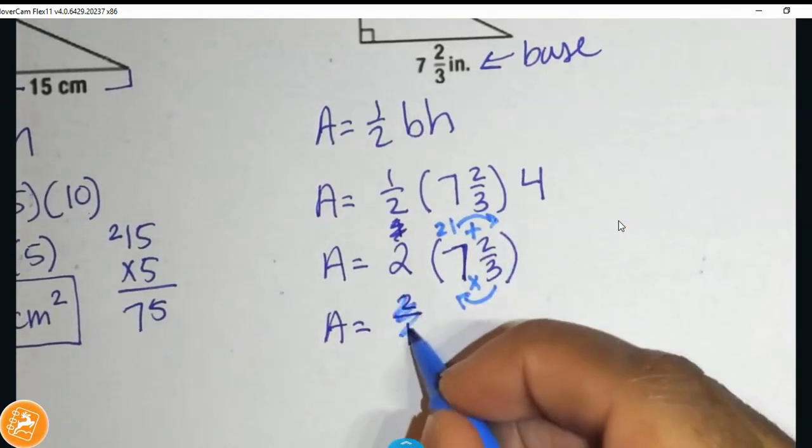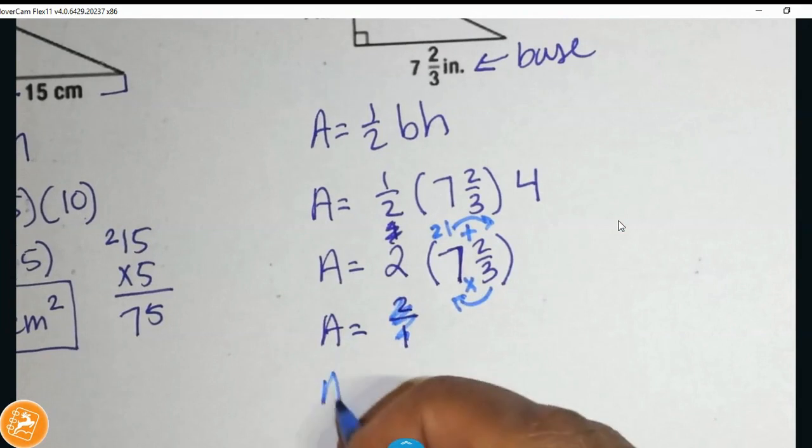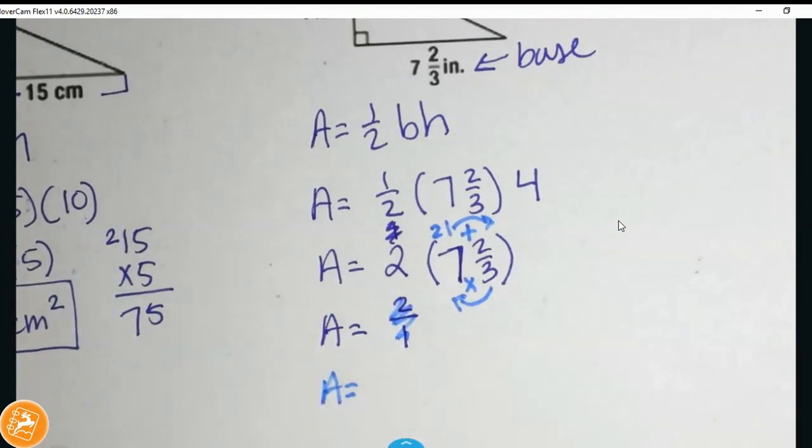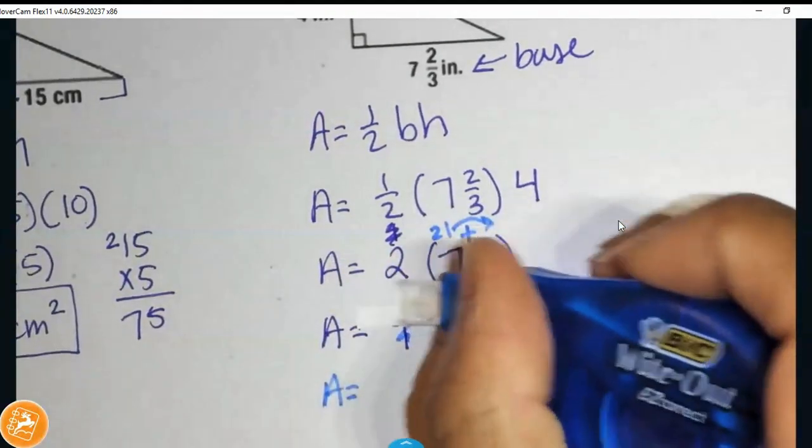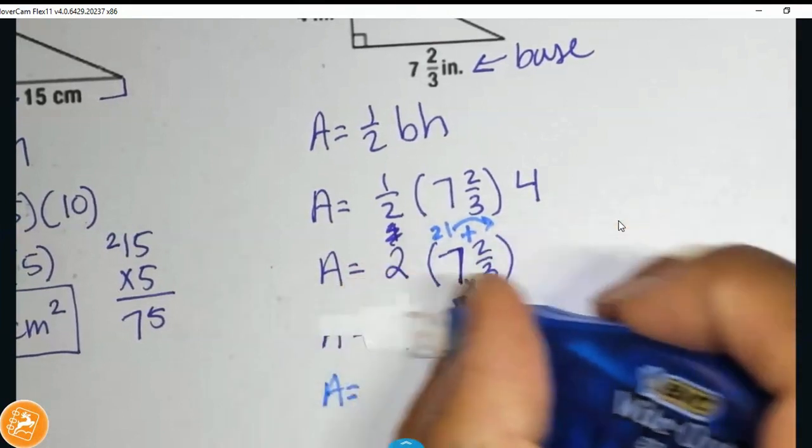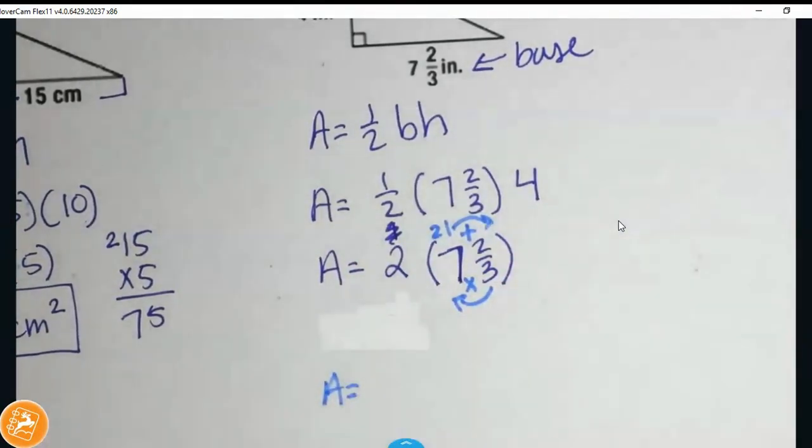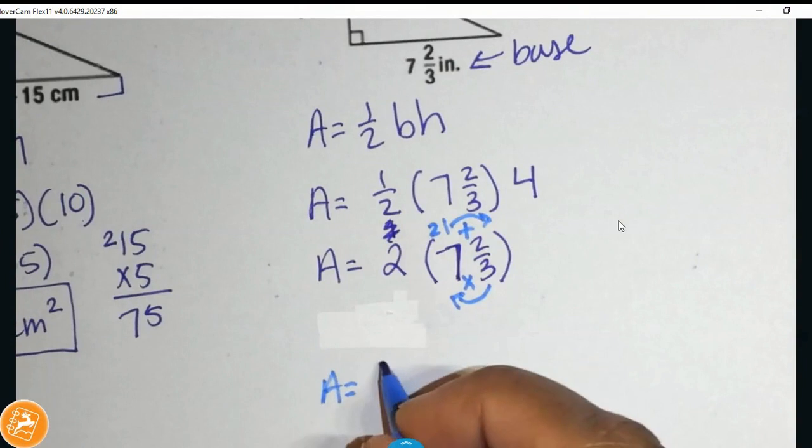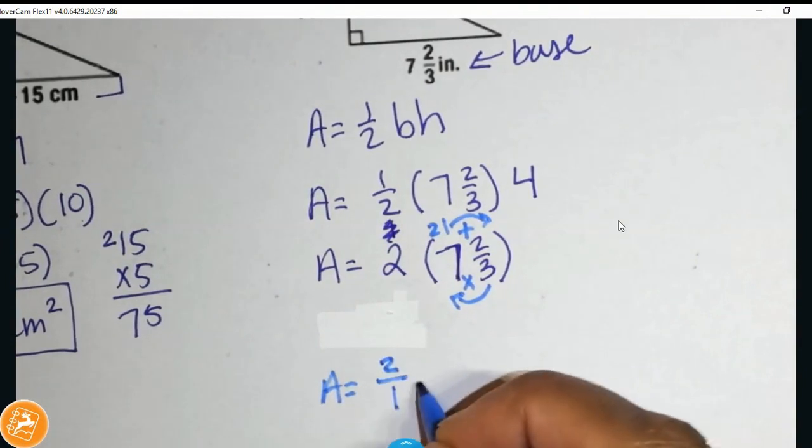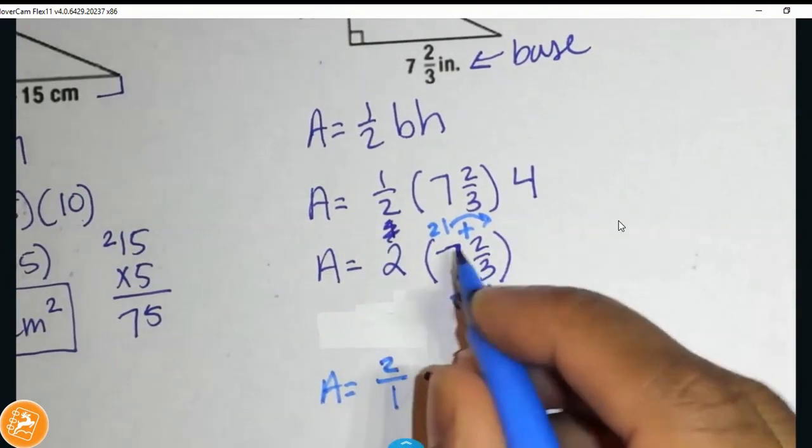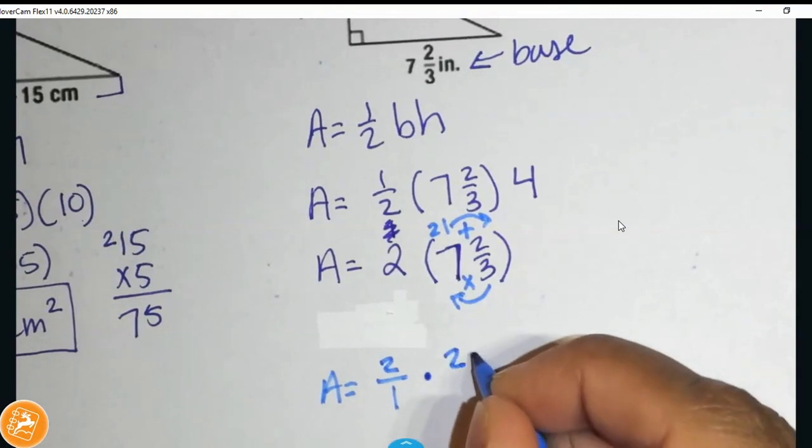So, I work that out. Let me go ahead and move this down. Area is equal to... this will add enough space. Area is equal to 2 over 1 times, then I have 23 over 3.